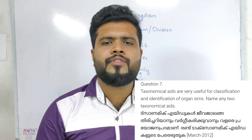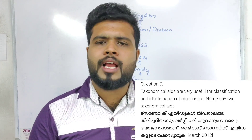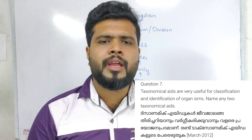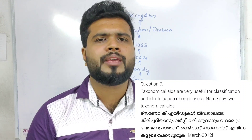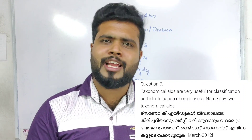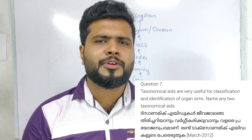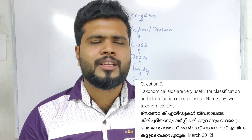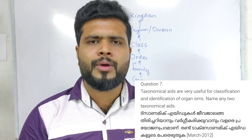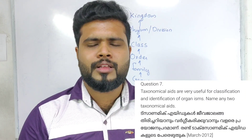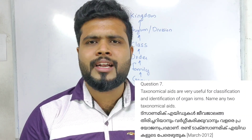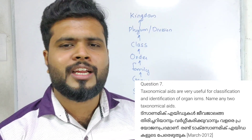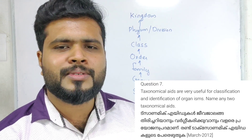Taxonomical aids are very useful for classification and identification of organisms. Name any two taxonomical aids: zoological park, museum, keys, flora, manuals, botanical gardens, herbarium.